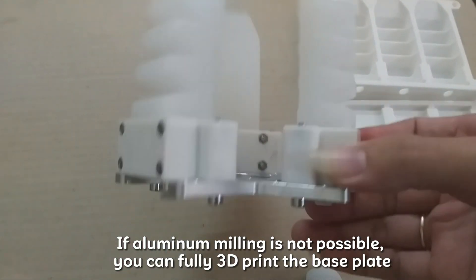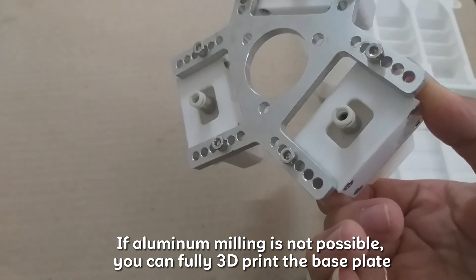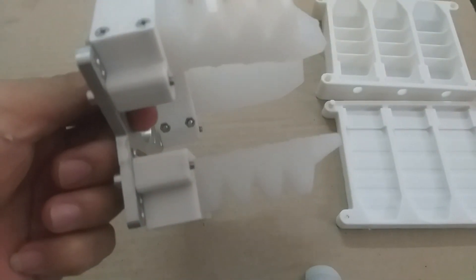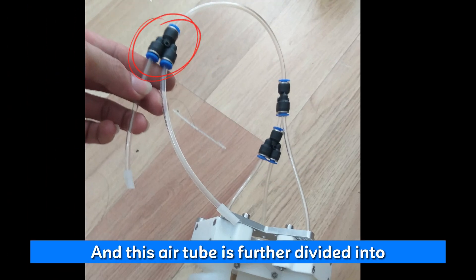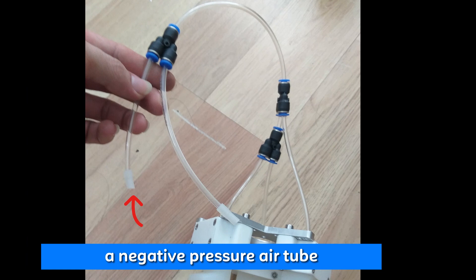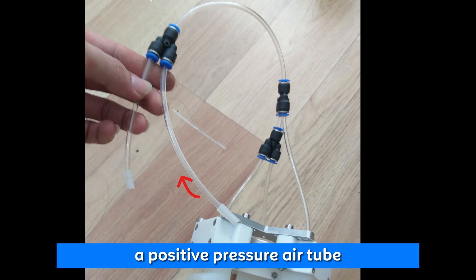If aluminum milling is not possible, you can fully 3D print the base plate. We will connect all 3 fingers with a single air tube. And this air tube is further divided into a negative pressure air tube and a positive pressure air tube.